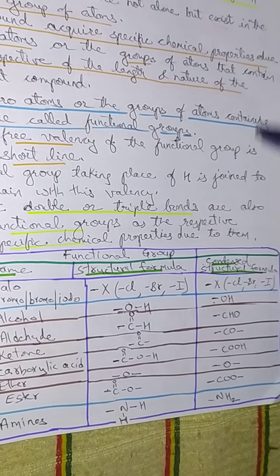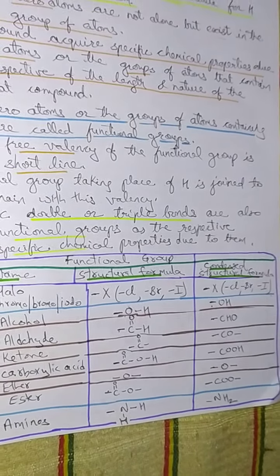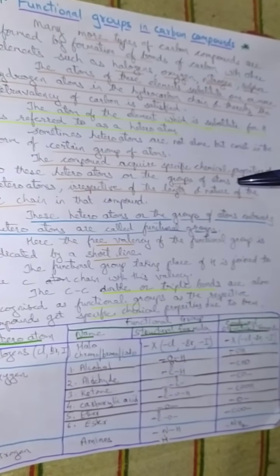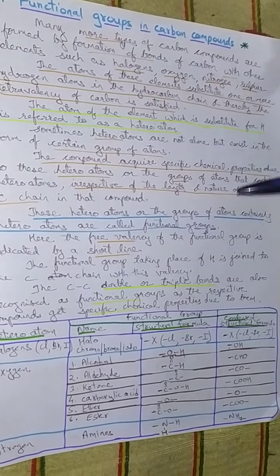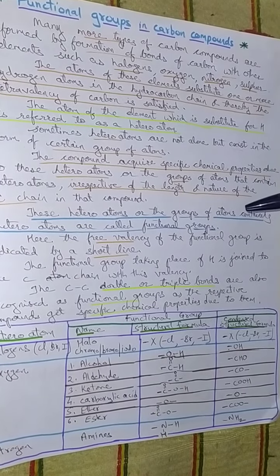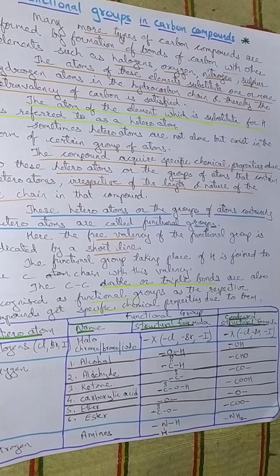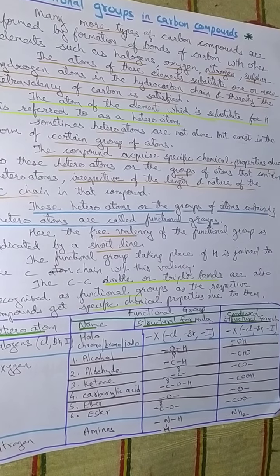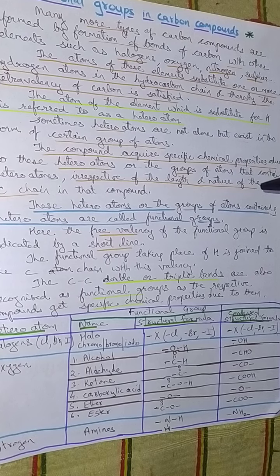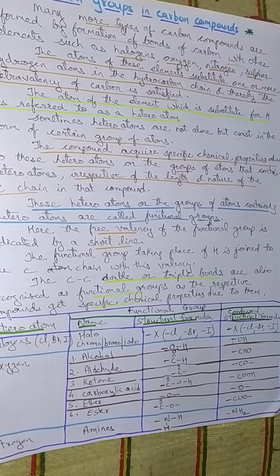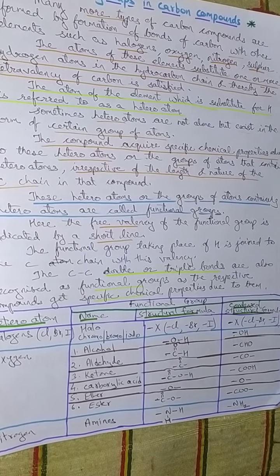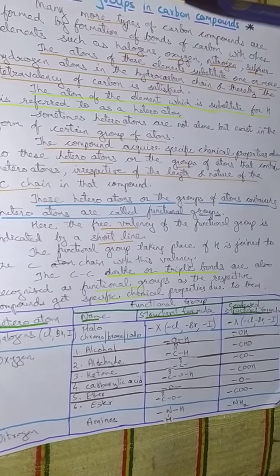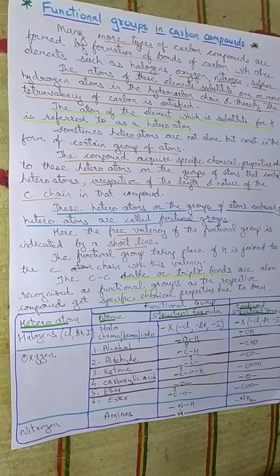So these are the functional groups. We have discussed functional groups in carbon compounds, and because of these functional groups we can find a maximum number of carbon compounds in the world. They are all called organic compounds and are very important, with their significance being due to their many different properties.